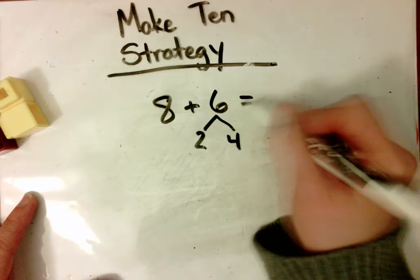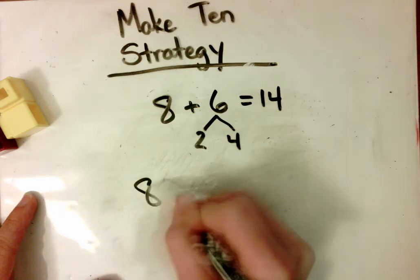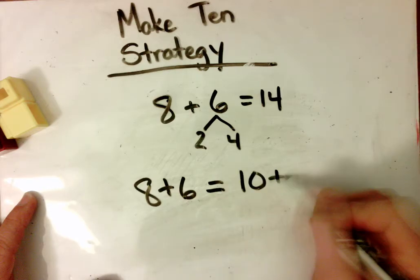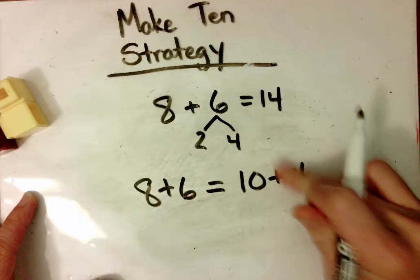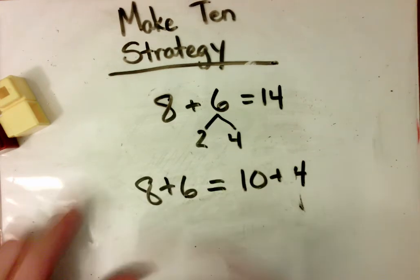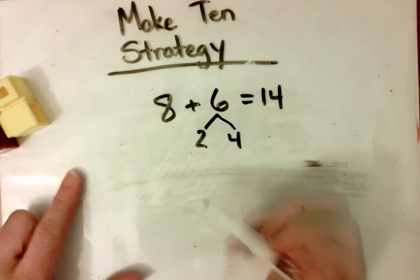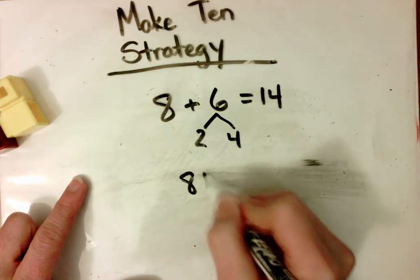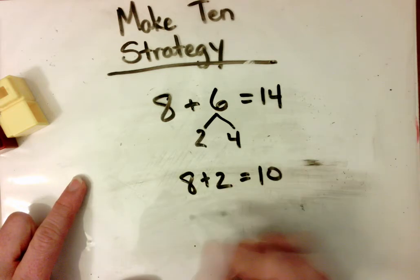10 plus 4 equals 14. 8 plus 6 is the same as 10 plus 4. Or I can write 2 number sentences to show how I got there. 8 plus 2 equal 10. And then I use that 10 plus 4 more to equal 14.